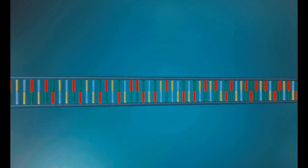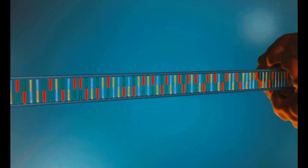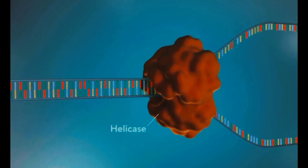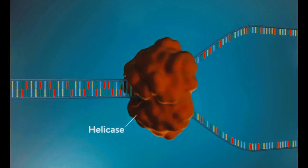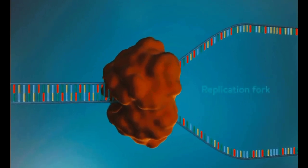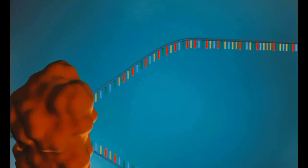The first step in DNA replication is to separate the two strands. This unzipping is done by an enzyme called helicase and results in the formation of a replication fork. The separated strands each provide a template for creating a new strand of DNA.